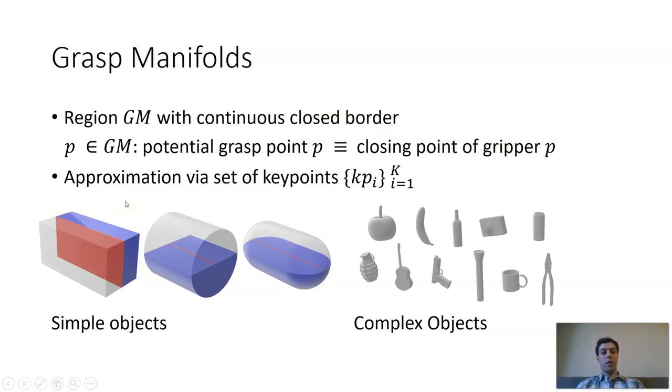Since some of the objects are more difficult to define regarding the grasp manifolds, we approximate our grasp manifold via a set of key points KPI. If we are considering these simple objects like the cuboid, the cylinder or the capsule, the grasp manifolds are quite easy to detect, like for example these four corner points here that span the grasp manifold or along the main axis of the object, being this red line here. But if we are considering more complex objects, then this becomes more complicated and we have to manually define how the grasp manifold is defined and where we could set the key points.